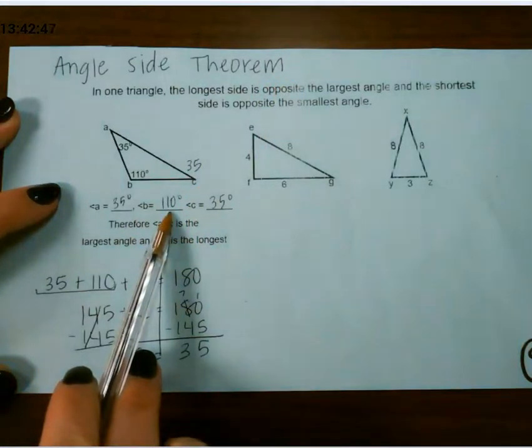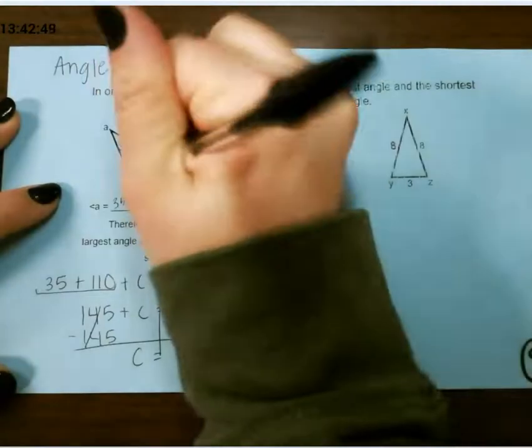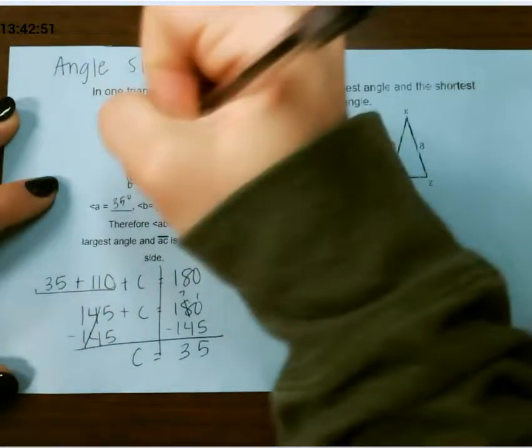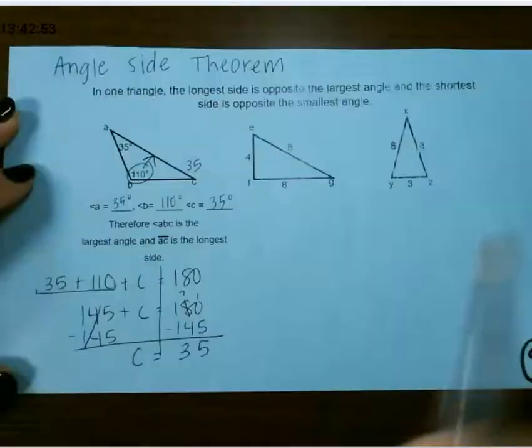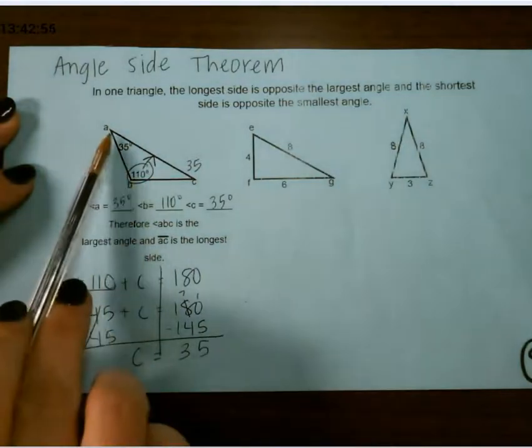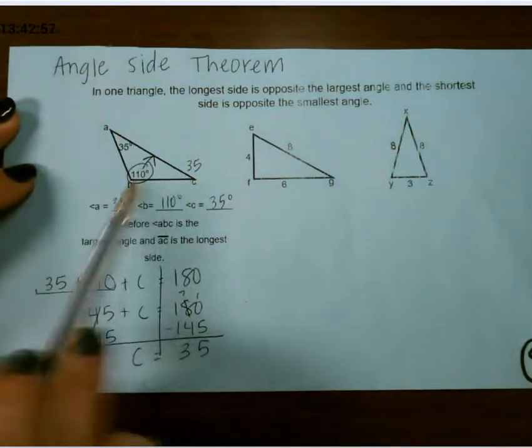Since this is the largest angle, the line that is across from that is the longest line. This is kind of easy to see, so let's look at another one.